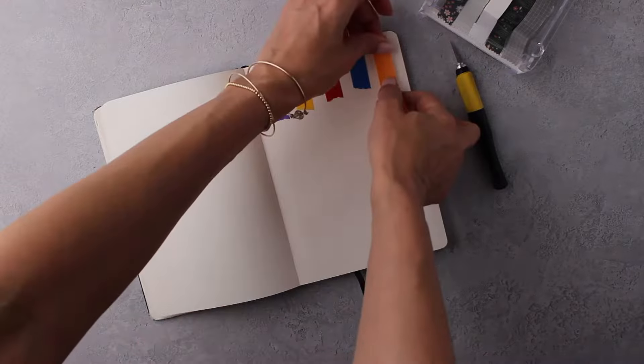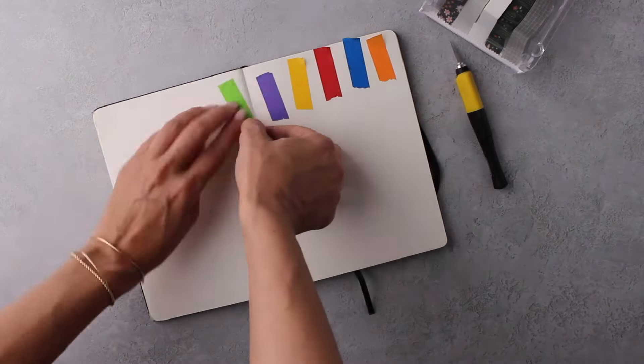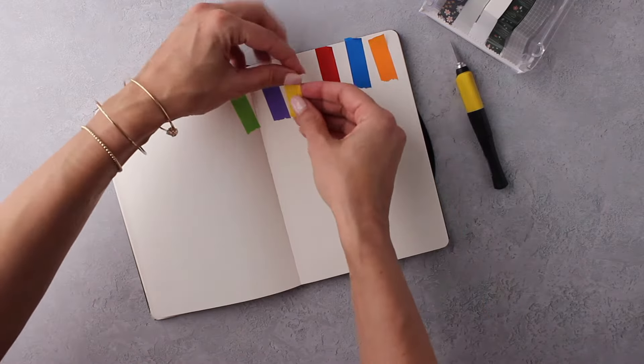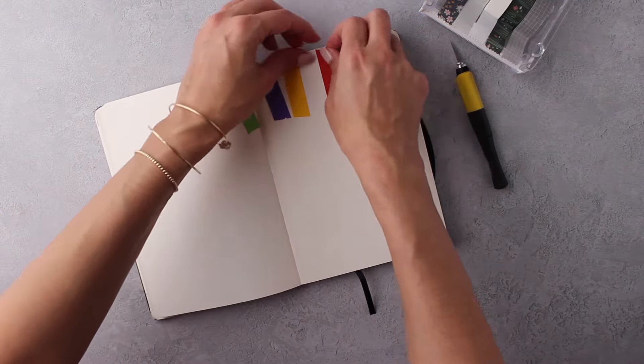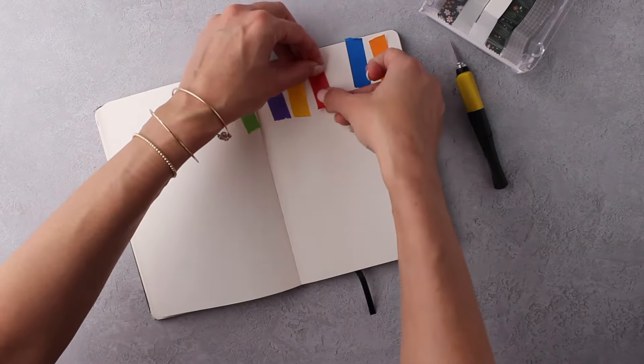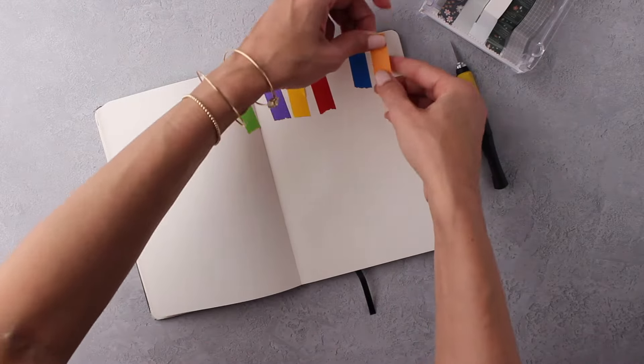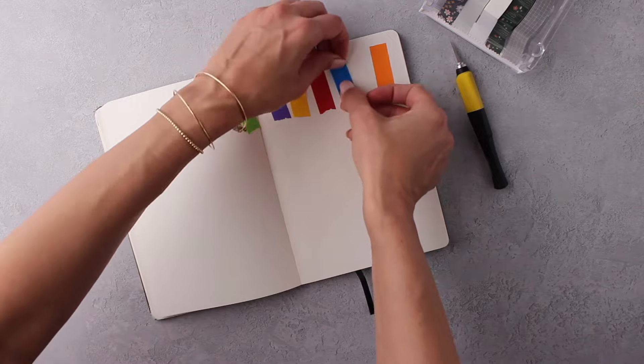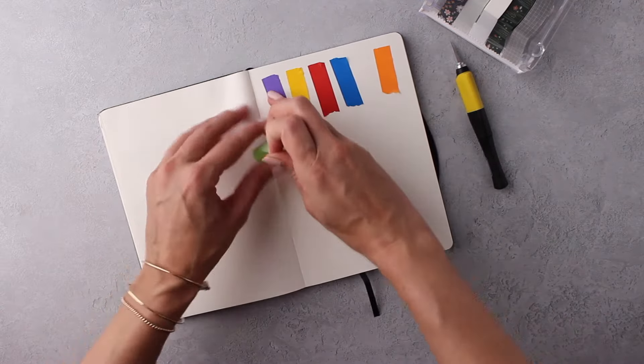I'm starting here with this really simple but really cute banner. I'm just tearing some pieces of washi tape here. Don't be too precious about it because as you can see I'm going to rearrange it and sort of re-space it according to the width of my page. You just want to cut the number of pieces for the number of letters that you're going to write in your banner.